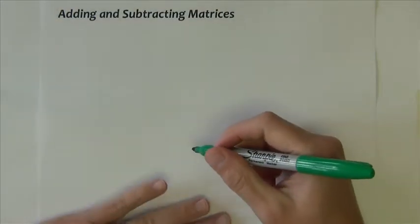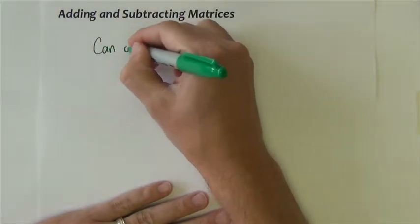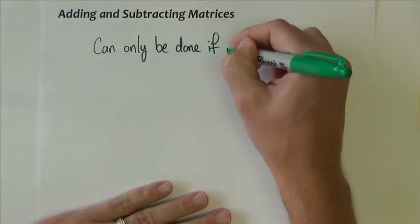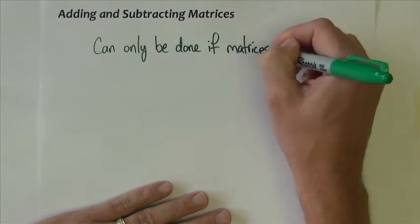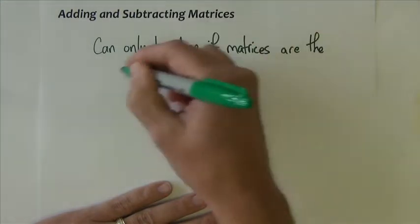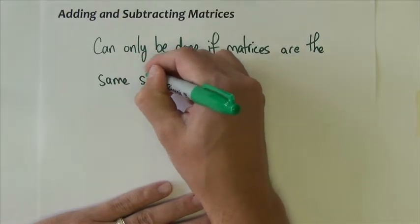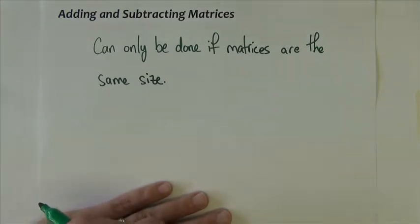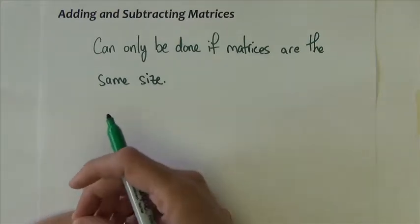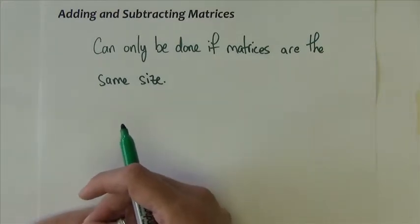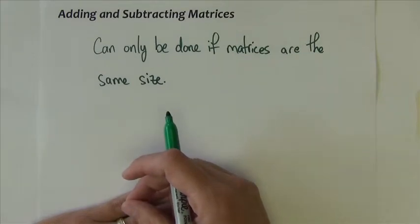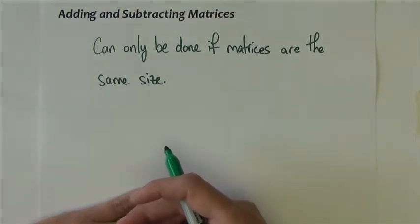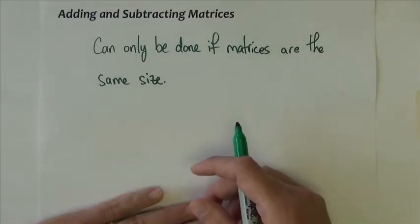Adding and subtracting matrices can only be done if the matrices are the same size. Once you check if they're the same size and determine yes or no, if you can add them, all you do is add the entries in the same corresponding positions within each matrix. It's a very intuitive, natural thing to do — most people get this right away. Let's do a few examples.